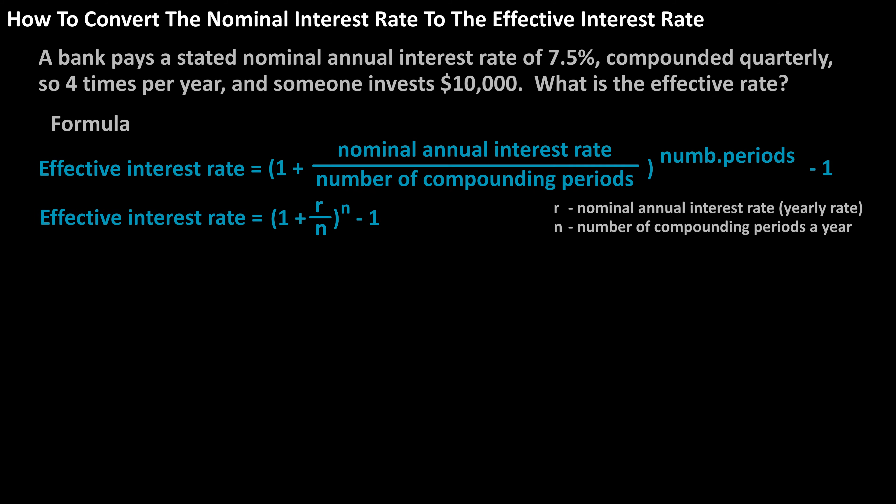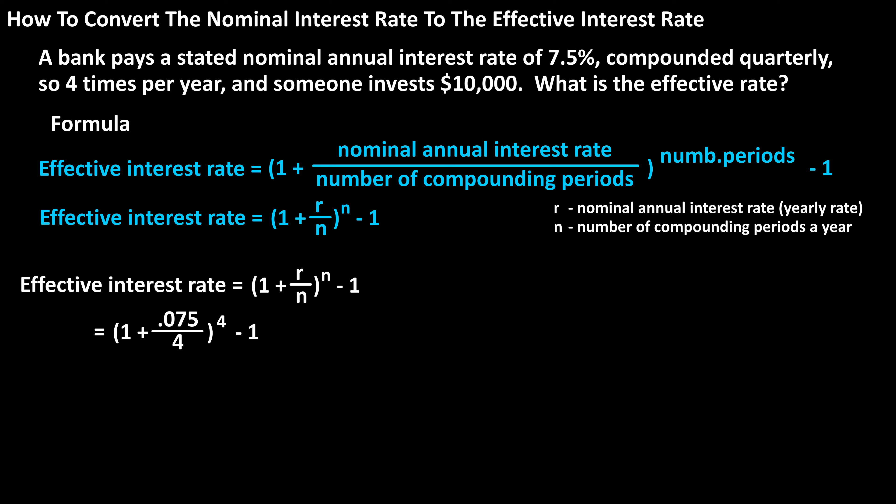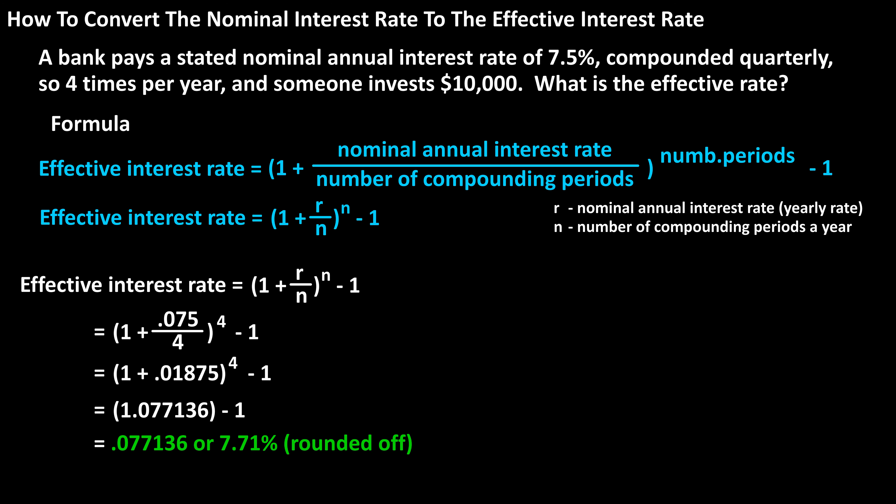Using the formula, we have: effective rate equals one plus 0.075 (the decimal value of 7.5%), divided by four, raised to the four, minus one. This calculates out to 0.077136, or 7.71% rounded off, as the effective rate or real rate of interest.